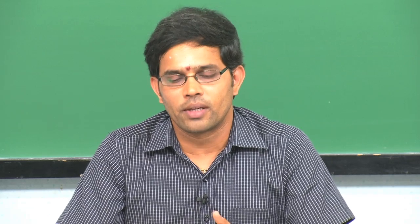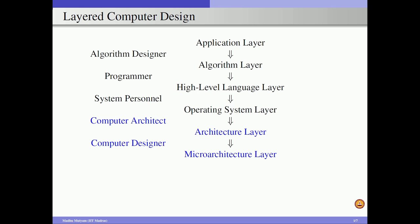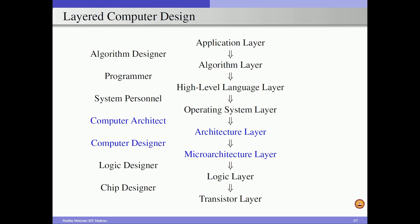If you see a computer design in a layered view, there are several layers starting from the application layer all the way down to the transistor layer. Each of these layers specifies a set of operations. For example, if you consider the application layer, it talks about the type of applications that run on a computer. When we design a computer, we design it for specific purposes — for example, target applications for a supercomputer are high-end applications such as weather modeling and molecular simulations.